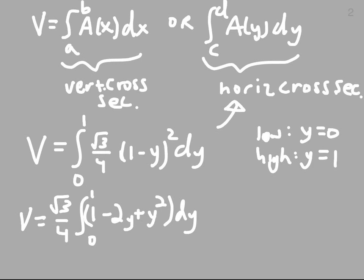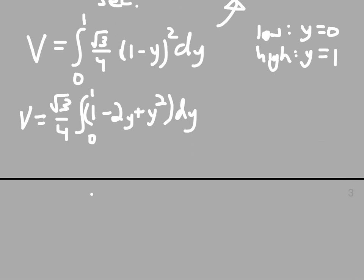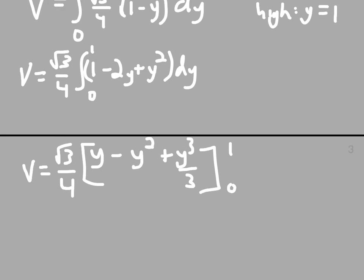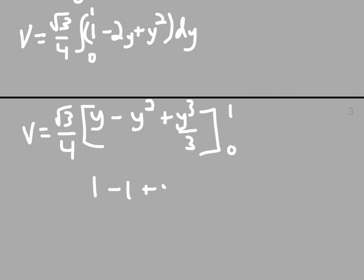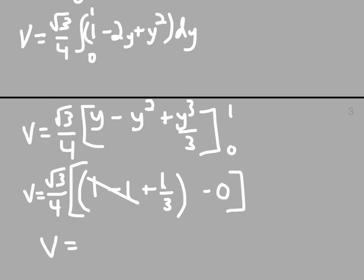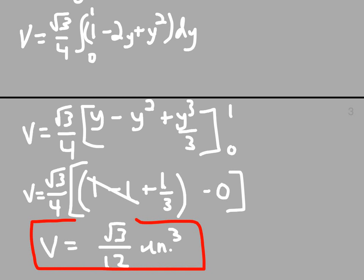We just evaluate this integral and we're done. We have Y minus Y squared plus Y cubed over 3 from 0 to 1 with the root 3 over 4 outside. So, we're going to have 1 minus 1 plus 1 third, and then minus 0, all of that multiplied by root 3 over 4. These cancel out nicely, and so the final answer for the volume is root 3 over 12 whatever units we have cubed. All right. Thank you.